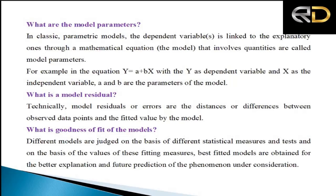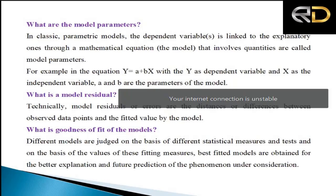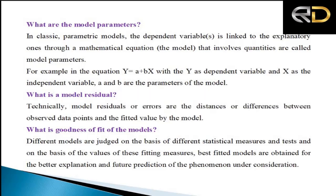Regarding model parameters, in statistics we fit two types of regression models: linear and non-linear. Linearity and non-linearity are of two types — linearity in variables and linearity in parameters. For example, y = a + bx is linear in both variables and parameters, whereas y = a + bx + cx² is linear in parameters but non-linear in the variable.